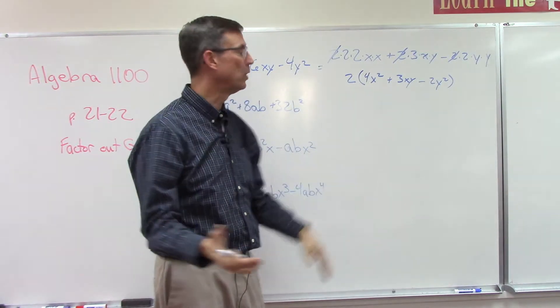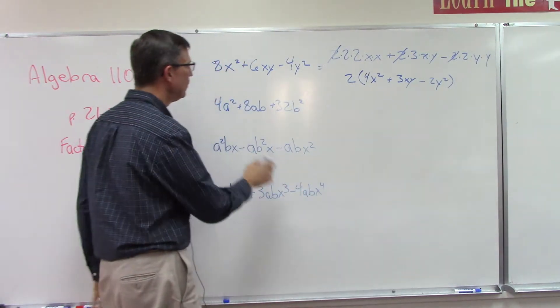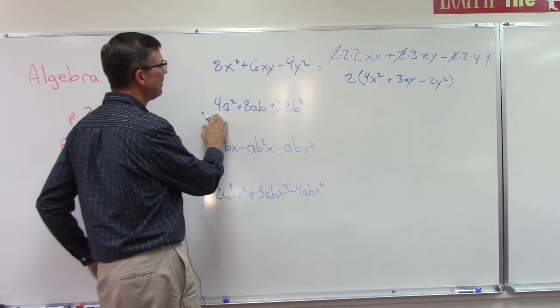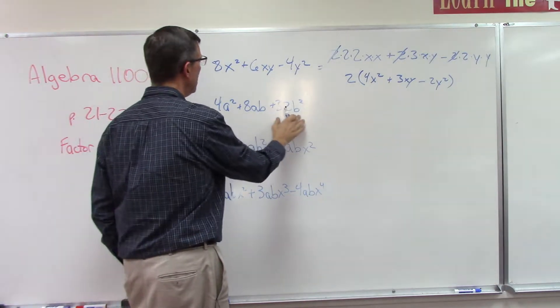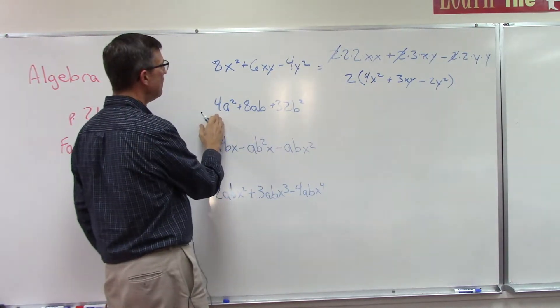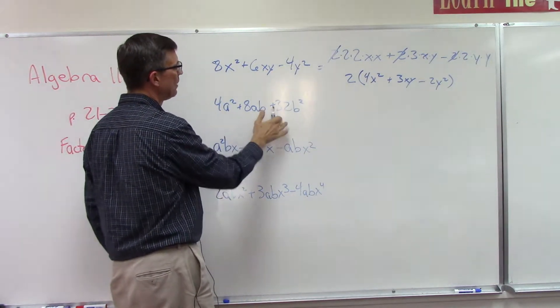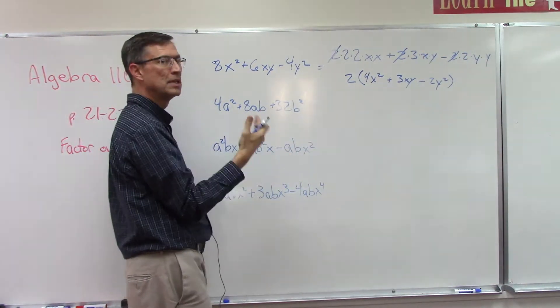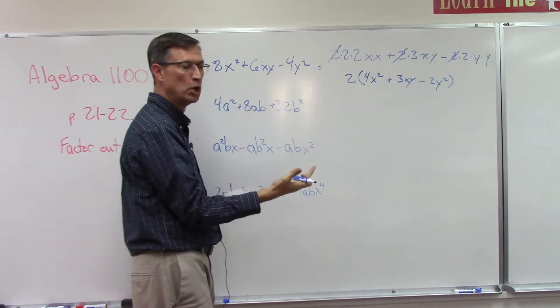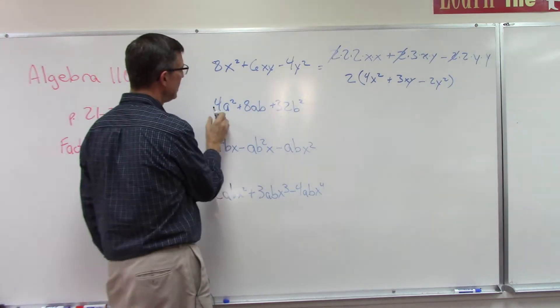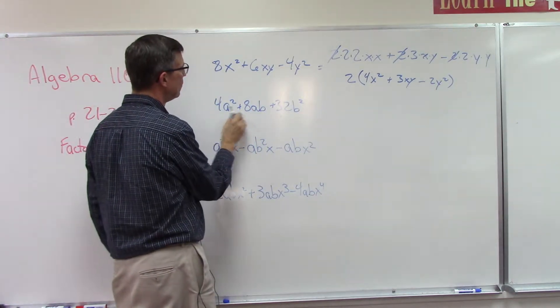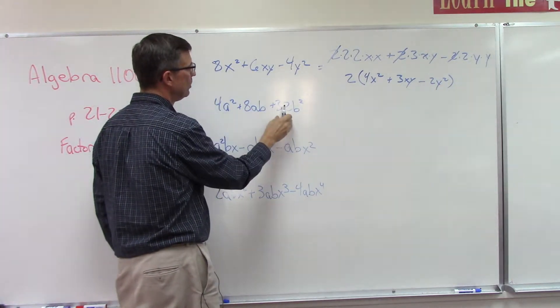That was an easy one. Let's see if we can find the common factor here. What's the biggest number that we can divide into 4, 8, and 32?